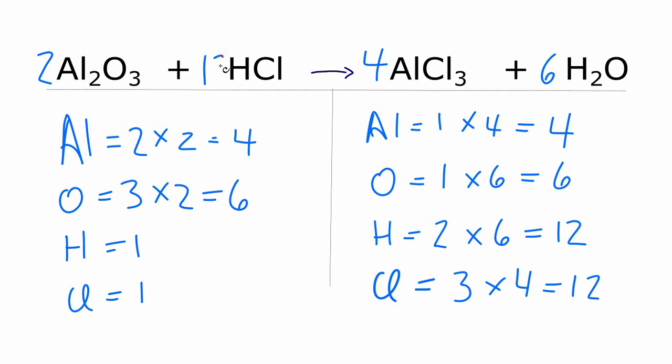So I'll just put a coefficient of 12 right here, and the hydrogens, 1 times 12, that equals 12. Chlorines, 1 times 12, that also equals 12. And we're done. This equation is balanced.